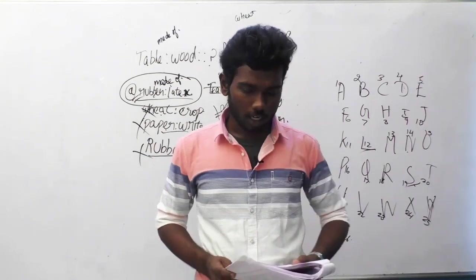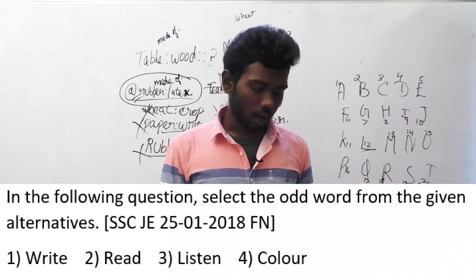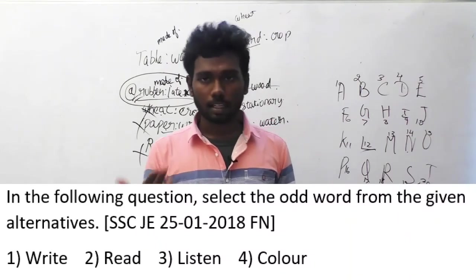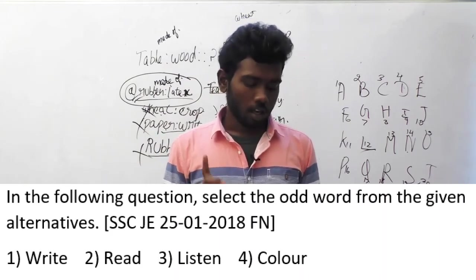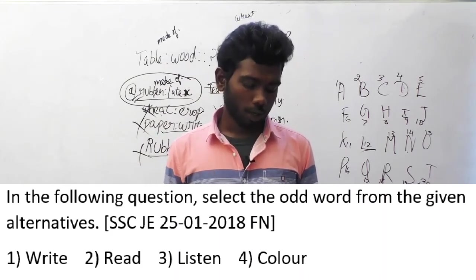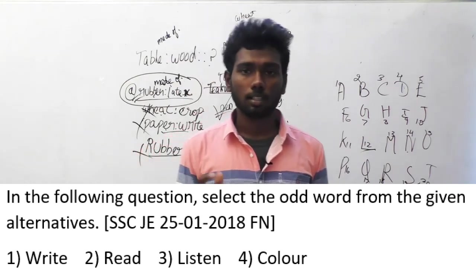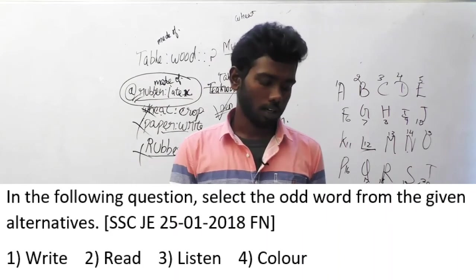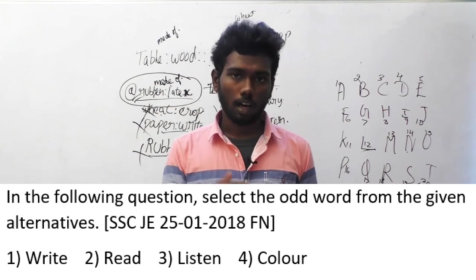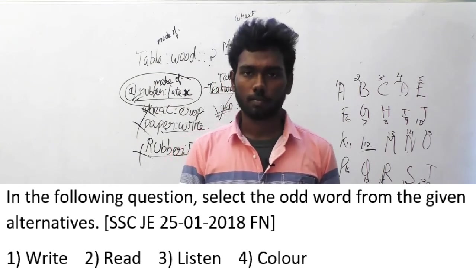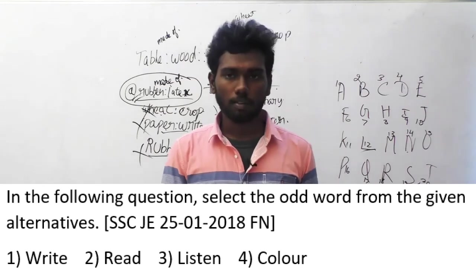Let us move on to question number 137. In the following question, select the odd word from the given alternatives. Option 1: write, option 2: read, option 3: listen, option 4: color. This question is very clear — read, write, and listen are very different from color. So option 4, color, is the answer.